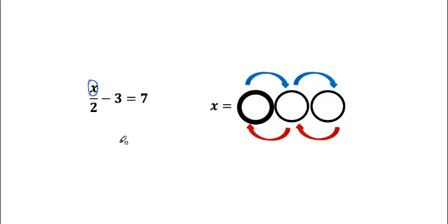Then we're going to follow the order of operations as if somebody had told us what x is equal to. For example, if we said x is equal to 10, we would do 10 divided by 2, and then we'd subtract 3.